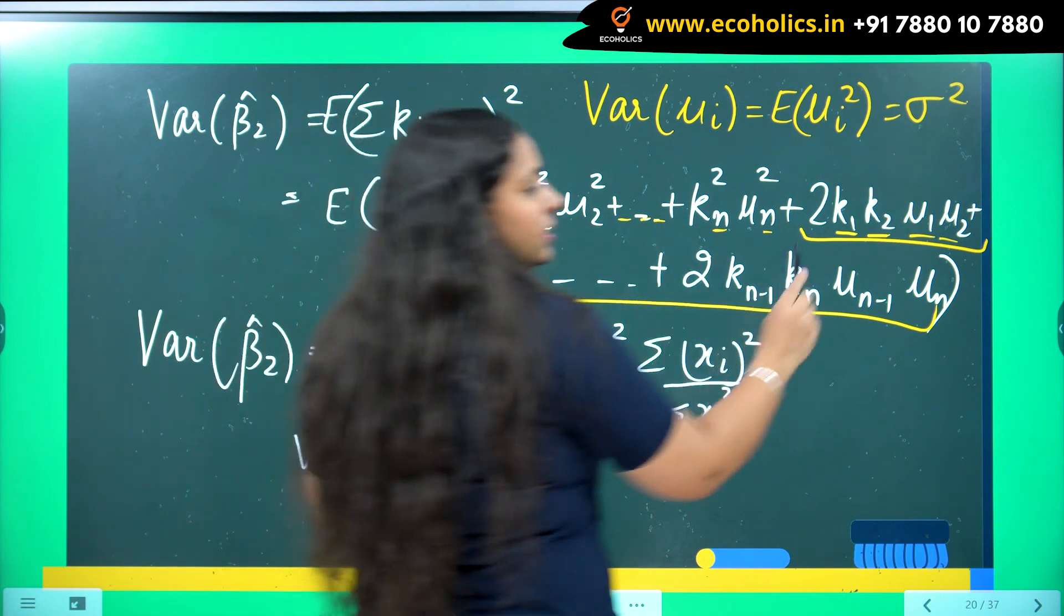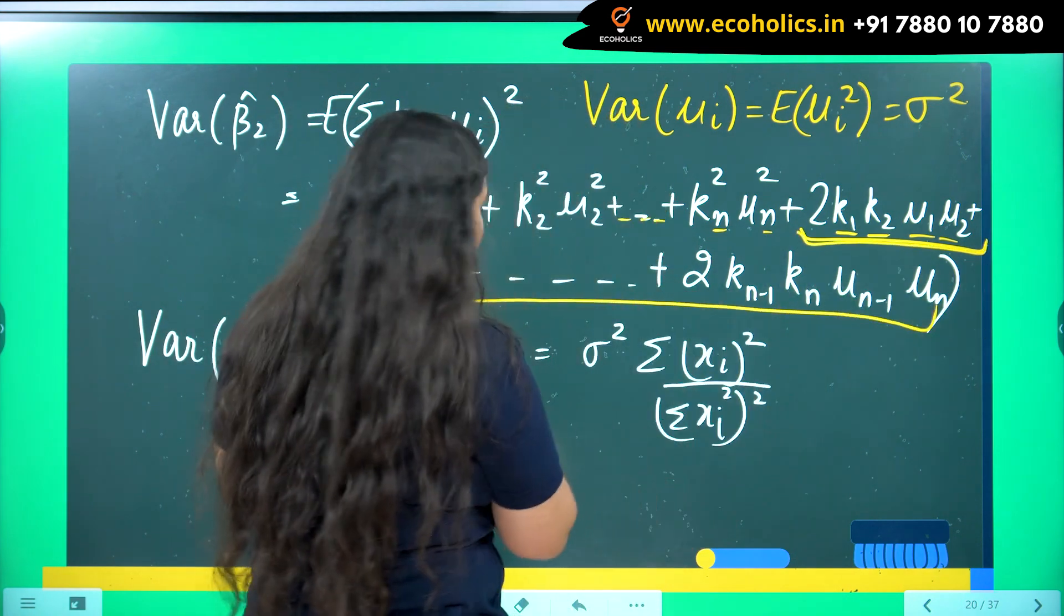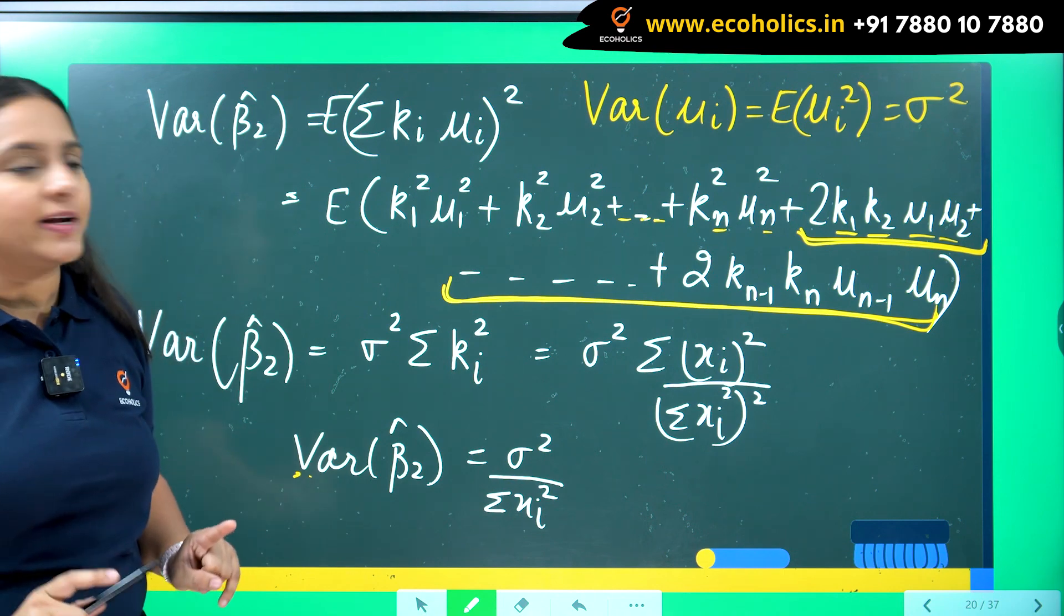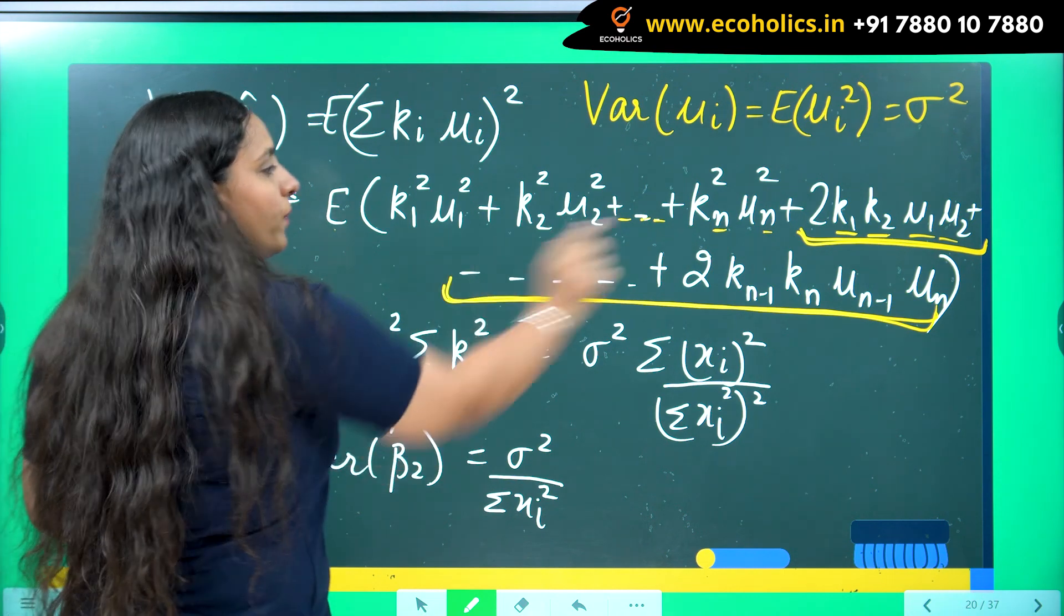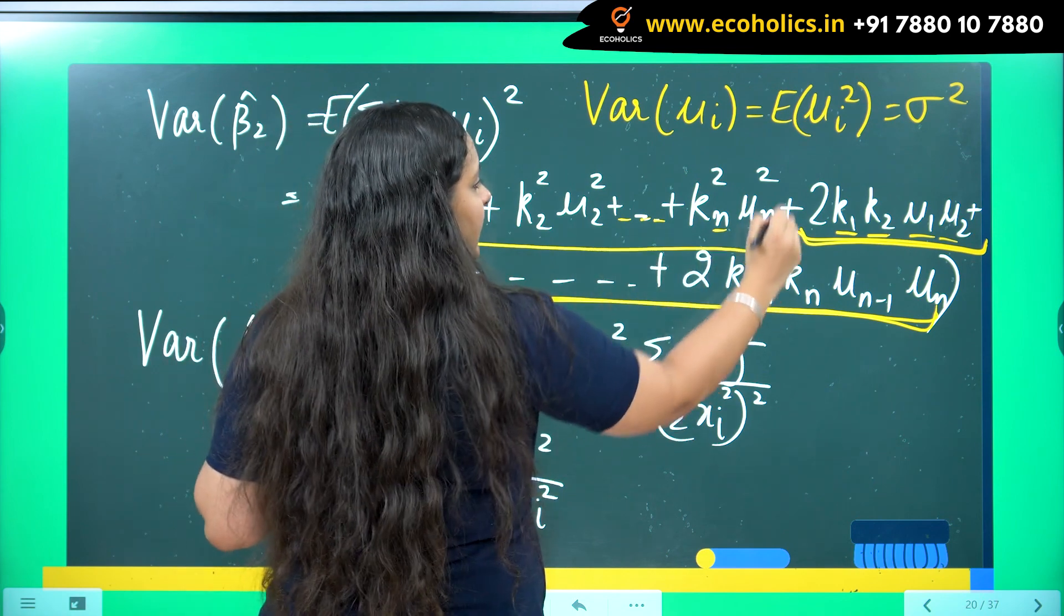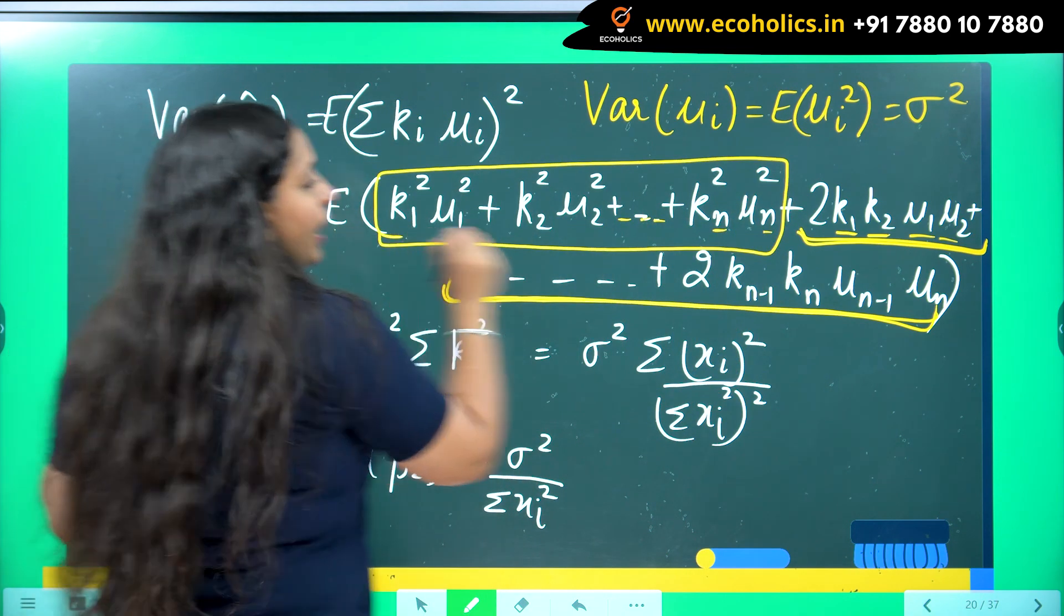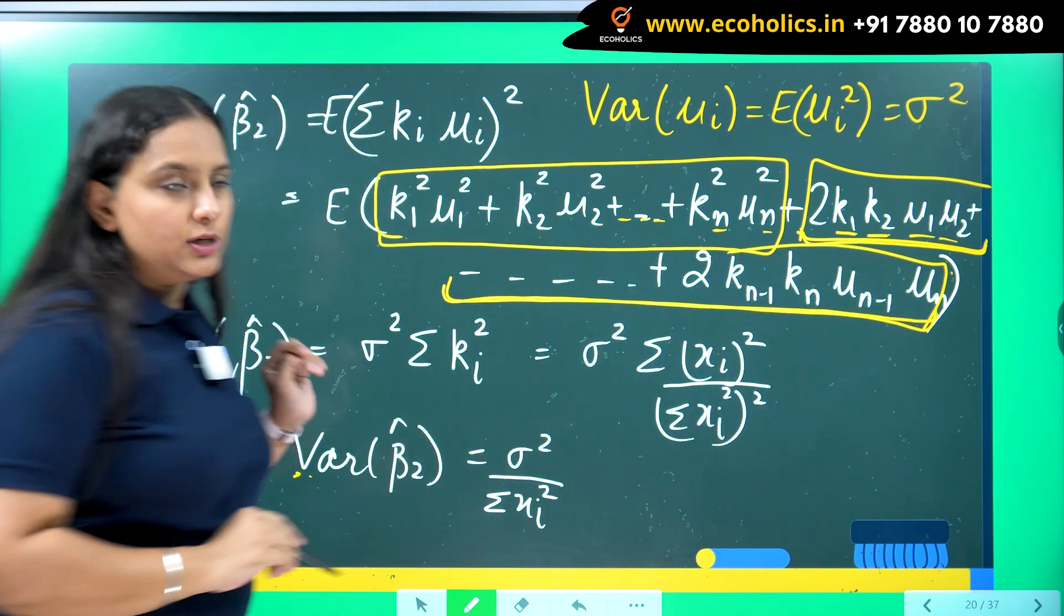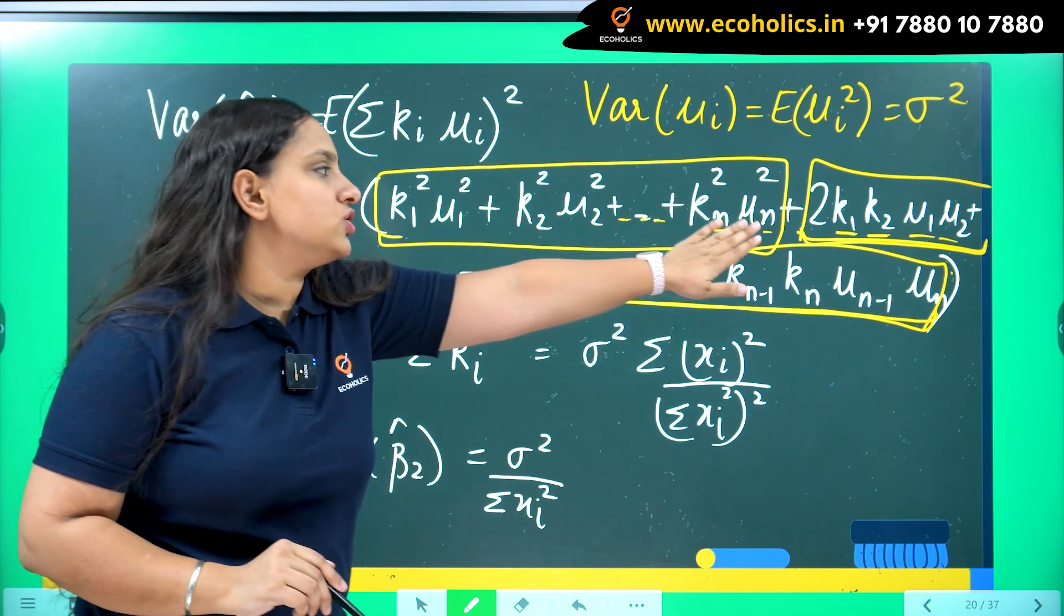So one thing, they will become 0 only after you take their expectation, not before taking their expectation. So I will open the expectation. So when I do their expectation I will get different answer. Now when I am taking expectation along with them they will become 0. Taking the expectations.